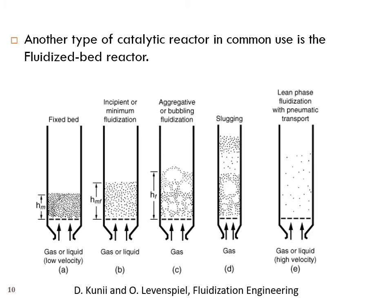Another type of catalytic reactor in common use is the fluidized bed reactor. Consider a cylindrical reactor: if catalyst is packed in and held by a perforated plate with flow passing through, that is a fixed bed reactor because the particles don't move.